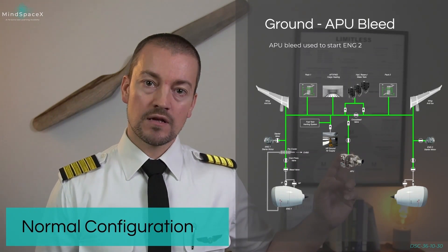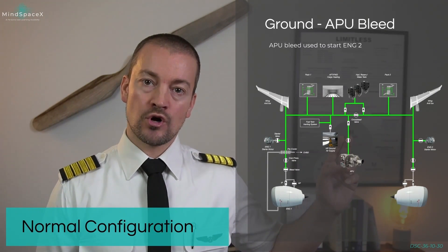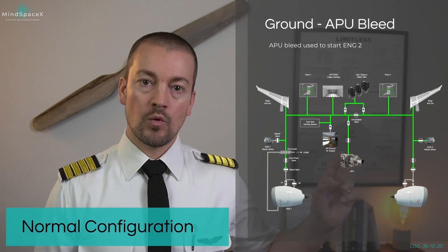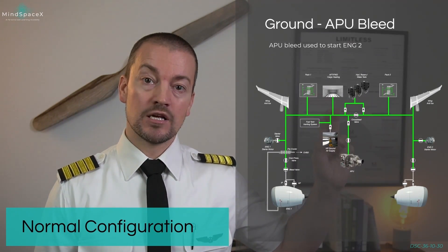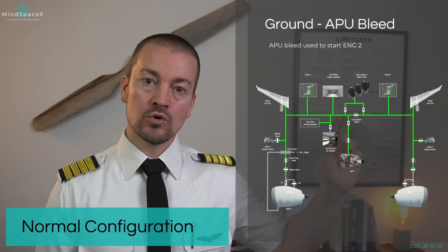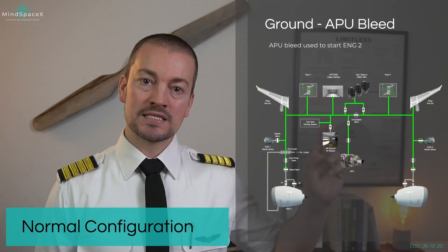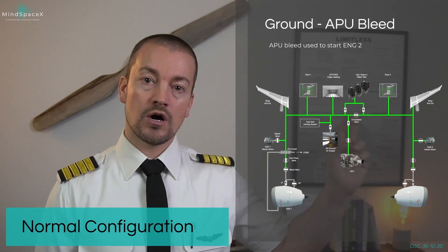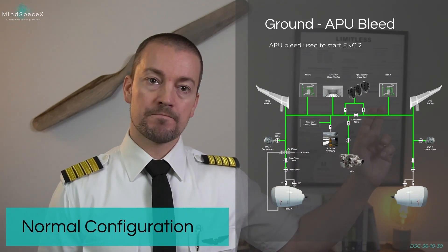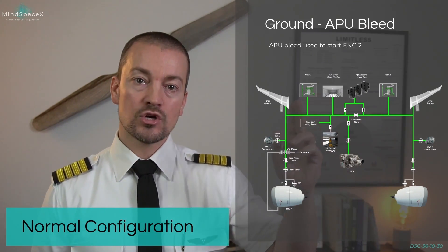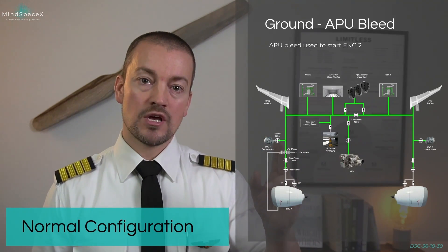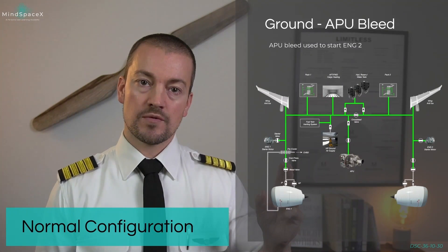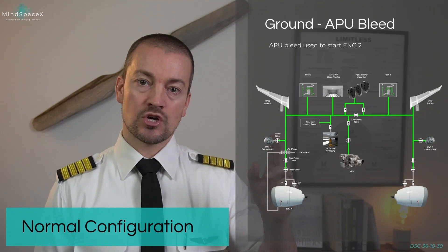The APU is running and the APU bleed has been turned on, allowing the APU bleed valve to open. When the APU is supplying bleed, the cross bleed valve will also open, allowing this single source to supply all of the consumers. The bleed air is also provided into the duct, but not going into the engine, because the bleed valve is closed and the starter valve is closed.